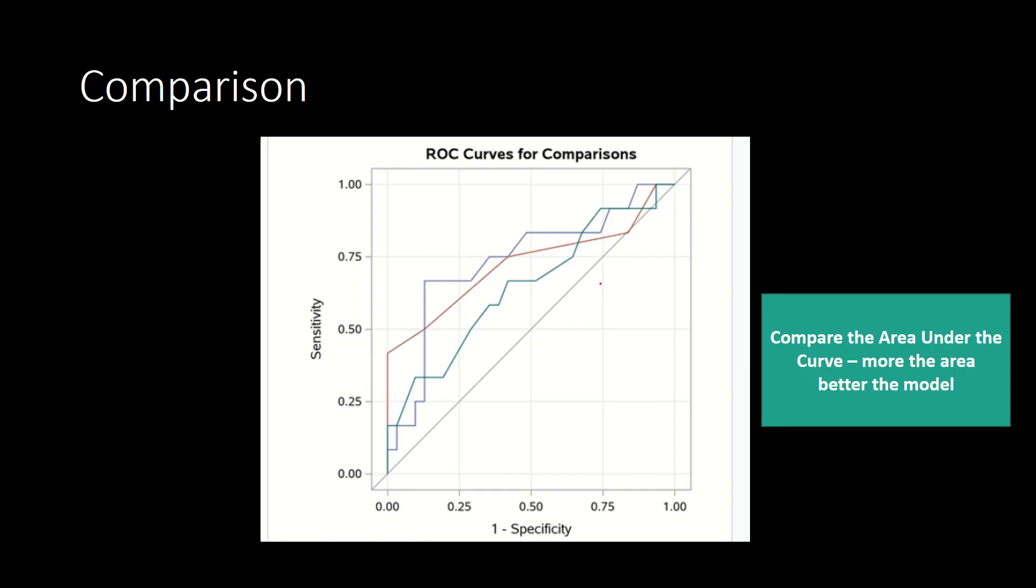I have another model with a different set of features, different independent variables. If you change the number of independent variables or simply take out some variables and add few others, your model performance could vary. How do you then choose the best model? You can compare the ROC and see where you have a better ROC curve. You can have multiple models and simply compare these ROC curves and select the best one.